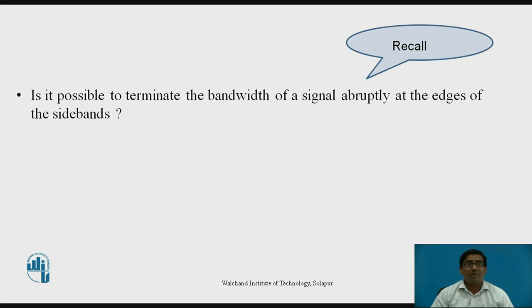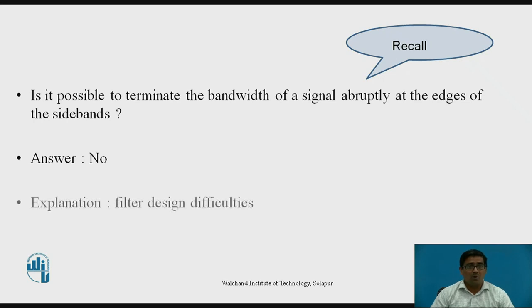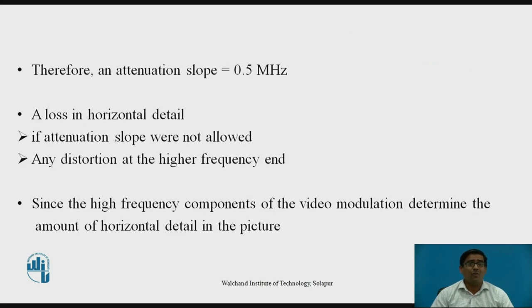Is it possible to terminate the bandwidth of a signal abruptly at the edge of the sideband? The answer is no, because filter design is difficult — standard filter design is difficult. That's why we cannot terminate the bandwidth of a signal abruptly at the edge of the sideband. Therefore, an attenuation slope of 0.5 MHz will be required. A loss in horizontal detail occurs if the attenuation slope were not allowed, and any distortion at the higher frequency end would cause horizontal loss.